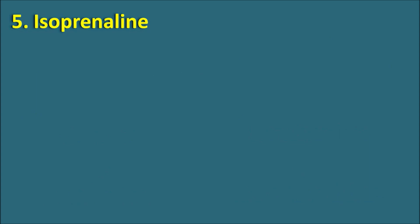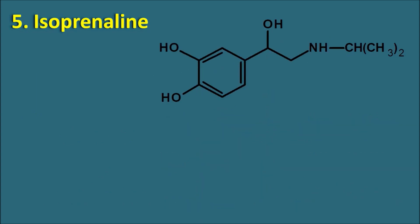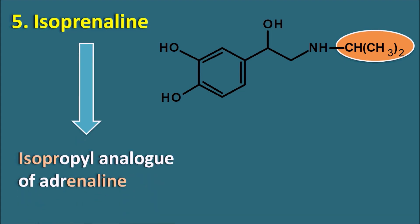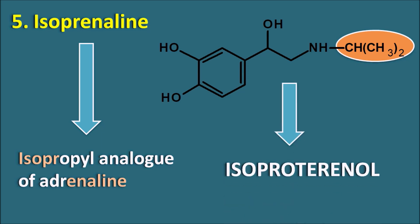The fifth one is isoprenaline. This is the structure of isoprenaline — again similar to the catecholamines but it is a synthetic catecholamine. On the nitrogen of the amine there is an isopropyl substitution. Isoprenaline is a structural analog of adrenaline with an isopropyl group, and can also be called as isoproterenol. Because of the bulky group on the amine, it is more selective for the beta receptors.